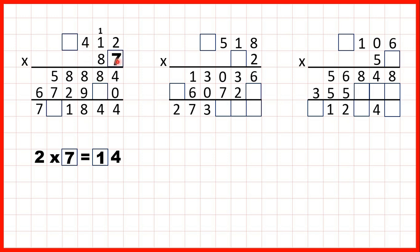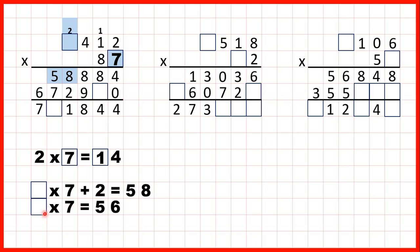4 times 7 is 28, so that's 2, 8. And now for this box, we have something times 7 plus 2 is 58. So before they added the 2, they must have done something times 7 to get 56. We know that 8 times 7 is 56, because 56 divided by 7 is 8. So this box here must be an 8. 8 times 7 is 56, plus 2 is 58. So now we cross out our working, and there's a 0 as the last digit of our second answer line.